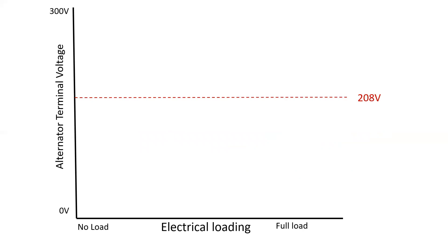If we take a look at a graph here of alternator terminal voltage and electrical loading, 208 is the nominal system voltage that we're striving for. When we connect a unity power factor load to the alternator, we'll notice that as the electrical load increases, the voltage or the terminal voltage of the alternator will slightly dip. The automatic voltage regulator will attempt to account for this.